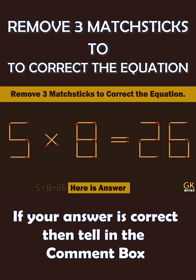Remove 1 from 8, another remove from 8, and last remove from another 6. The final answer is 5 multiply 5 equals to 25.